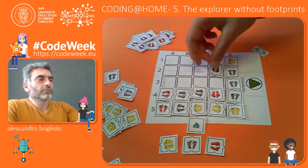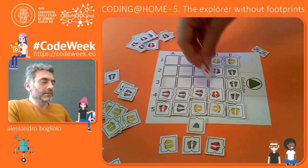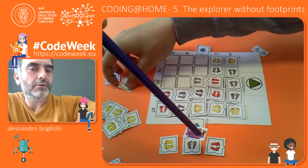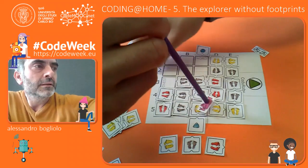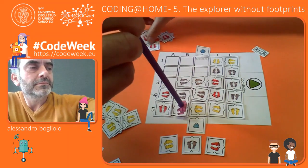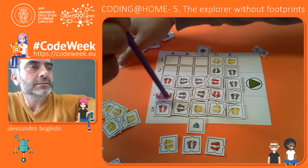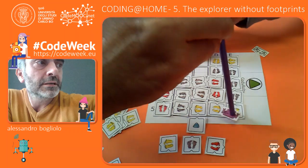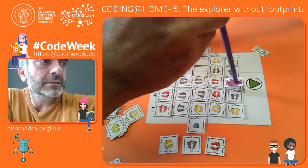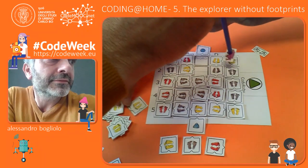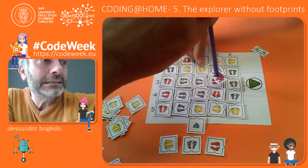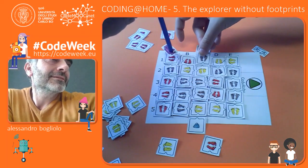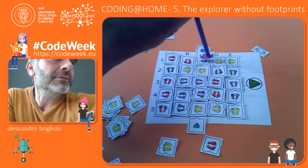While we are still building the path, I can start following it with my little robot here: down left, straight, right, right, straight, straight, right, left, left, straight, straight, straight, left, left, straight, right, straight, right, right, right, left, left, straight.